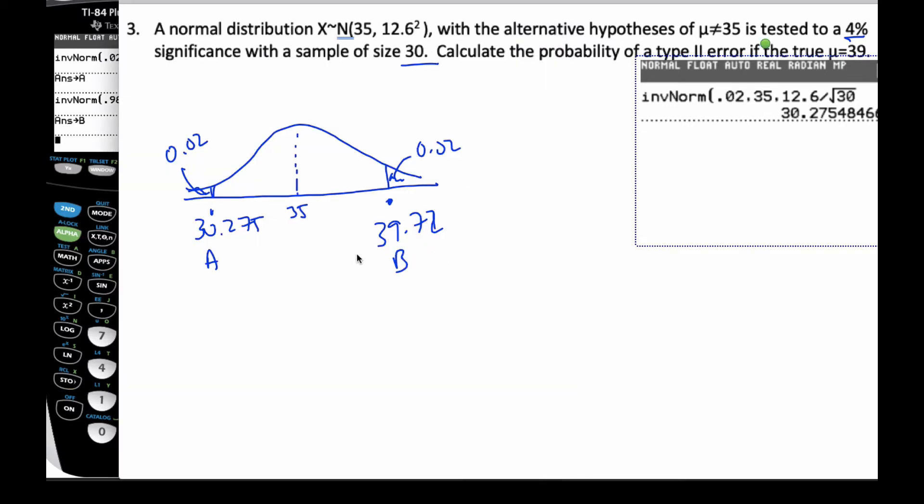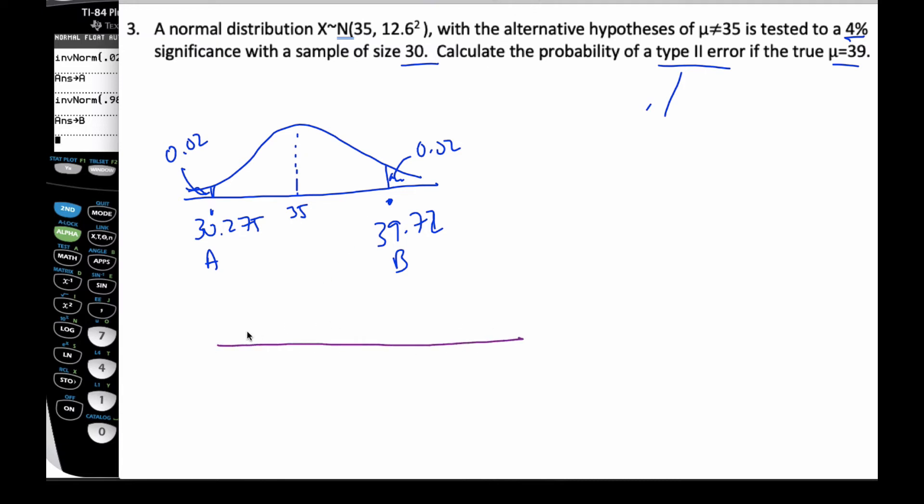Okay, this is B. But this is the curve we're starting off our hypothesis testing on. We're told that in reality, the true mean is 39. So that means I have a second curve that is over here, that looks something like this.